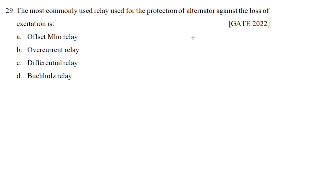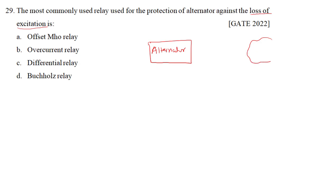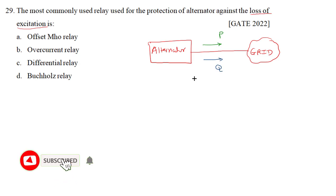We know that in order to provide protection of an alternator, we need to employ different types of relays. In the case of an alternator, we need to provide protection against faults and also against abnormal conditions. In normal condition, the alternator will supply both active power P and reactive power Q to the grid.